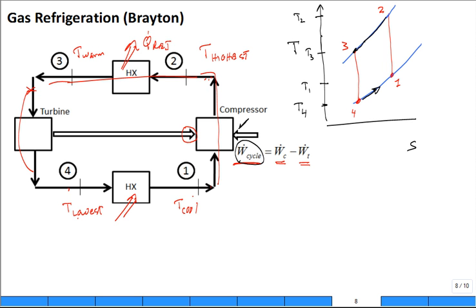One of the challenges is if this is absorbing heat from a constant temperature, T low, the temperature of the refrigerant—the gas inside this heat exchanger—always has to be less than T low. So that's your lowest value of T low.